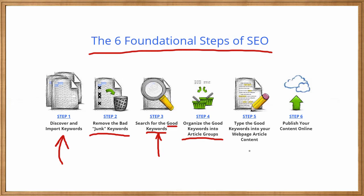Keyword Researcher also allows you to create content in the app, and the app will tell you if your keywords exist in the article content or not. And then when your content is all done, you can export it to WordPress if you want. So again, these are the very simple six foundational steps of SEO. No matter what happens in the future of SEO or what new tools come out, you still need to be comfortable with these six steps.